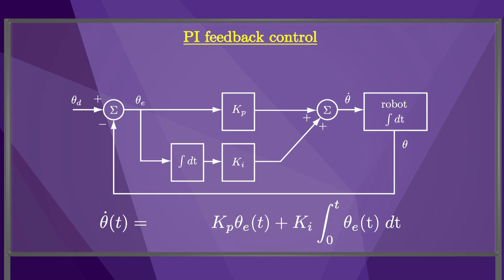These terms are then summed to produce the commanded joint velocity. The robot moves, and a sensor returns the actual position to the controller.